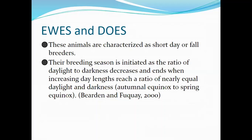For the northern hemisphere, winter is December through February and summer is June through August. For the southern hemisphere — which includes Australia, New Zealand, Argentina, South Africa, and Chile — the seasons are opposite: December through February is their summer, and June through August is their winter.